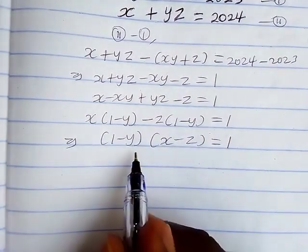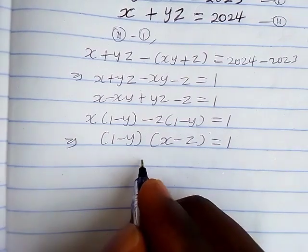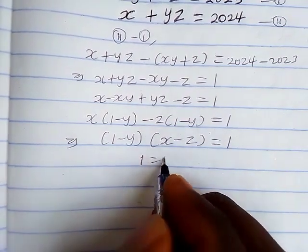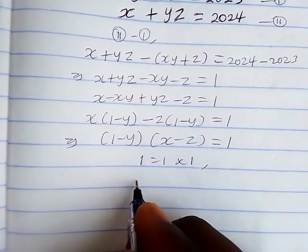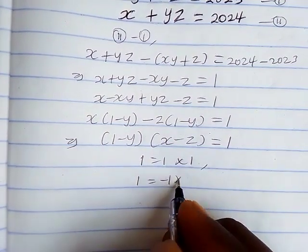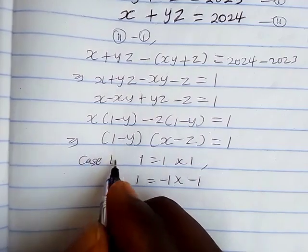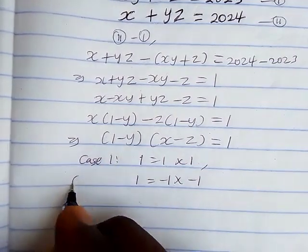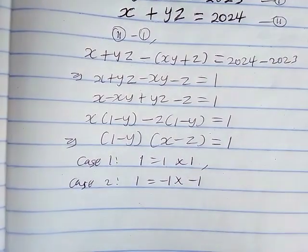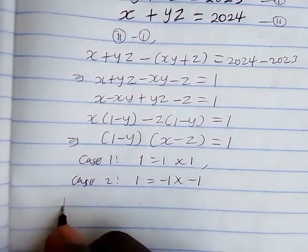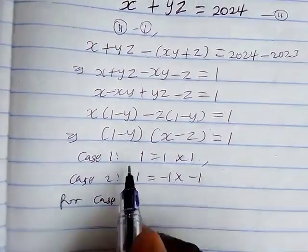Now we are going to do some manipulation. The number 1 can be written as 1 times 1, and likewise it can also be written as negative 1 times negative 1. So let's call the first case 'Case 1' and the second case 'Case 2', and consider each in turn.